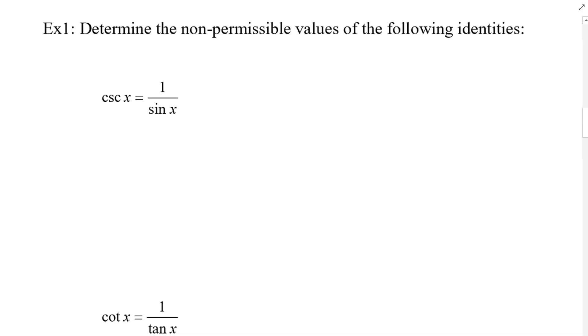So here's our first example. It says determine the non-permissible values of the following identities. So that's one of the identities from the previous page.